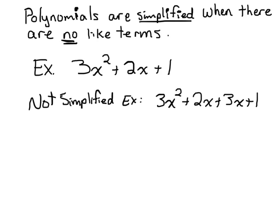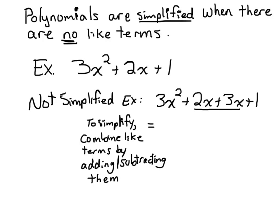In order to simplify the polynomial, you have to gather like terms. You look at the terms that are like, and you add and subtract them. To simplify, combine like terms by adding and subtracting them.